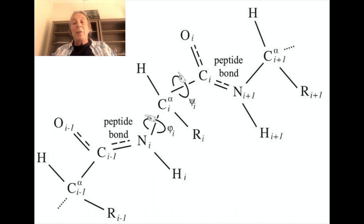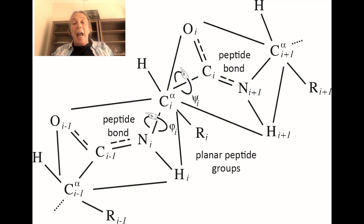A peptide group is the collection of six atoms, C-alpha, C-N, C-alpha, in the backbone, together with the oxygen O bonded to C and the hydrogen H bonded to N, as pictured. The important geometric characteristic is that these six atoms lie in a plane. The standard conformational angles phi and psi describe the rotations between planes of consecutive peptide groups.